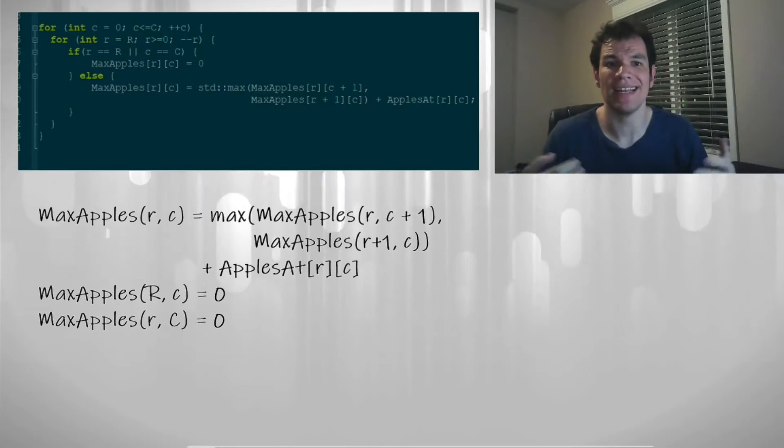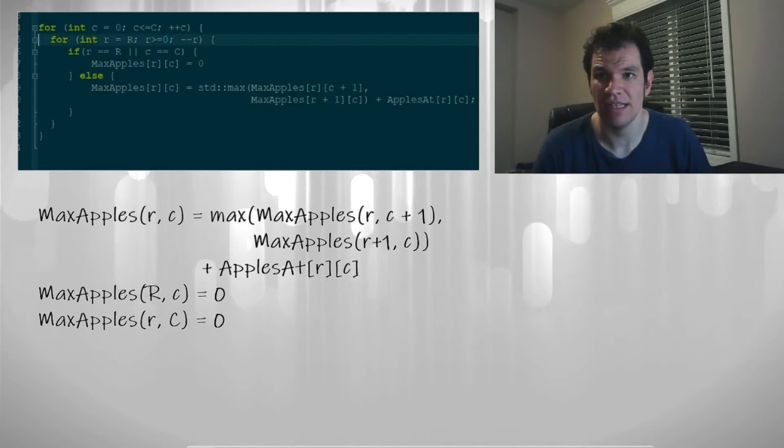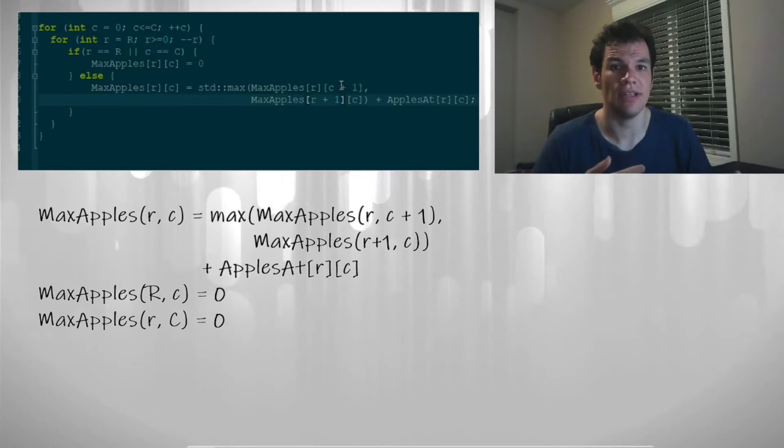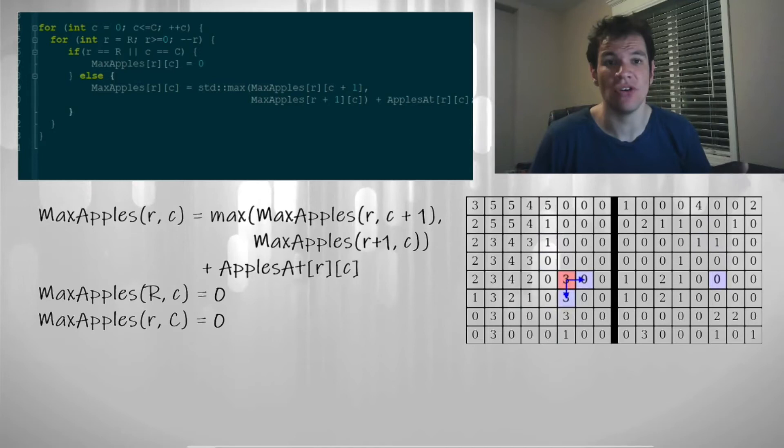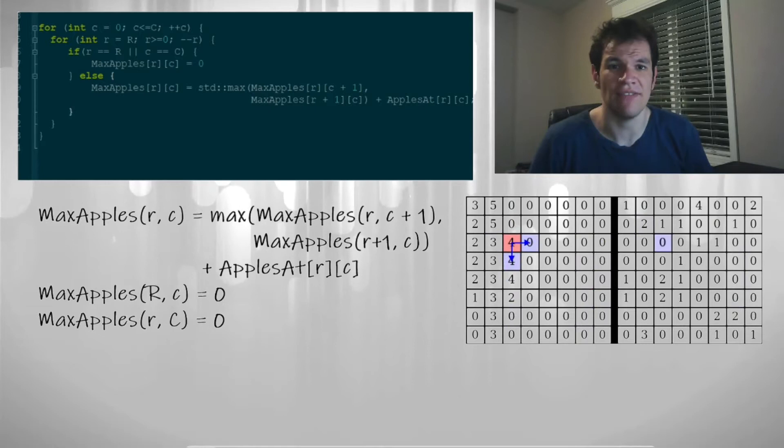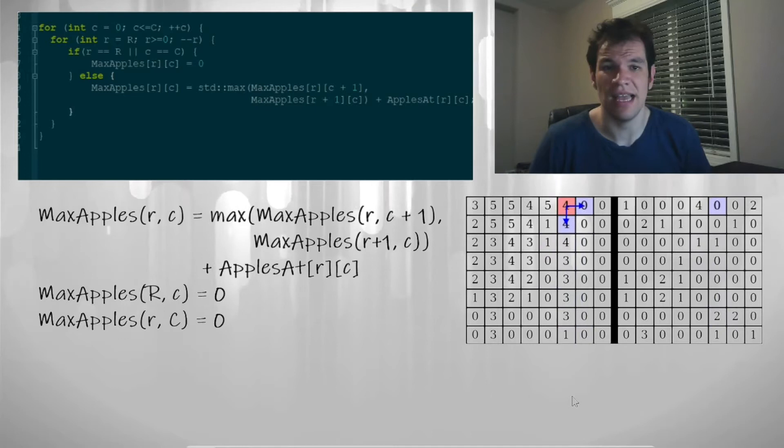And now, what would happen if we change the order of the first loop, like this. Now it's increasing instead of decreasing. Just take a few seconds to think about it. And this is how the algorithm would run if we use this kind of code. In this case, you can see that it's trying to use a value that hasn't been calculated yet. And as expected, the answer is not the correct one.